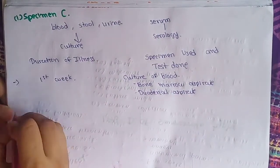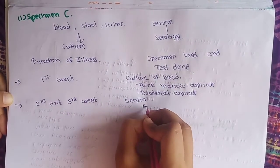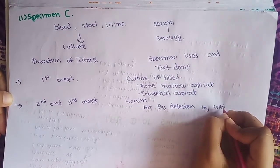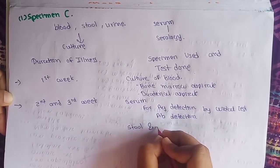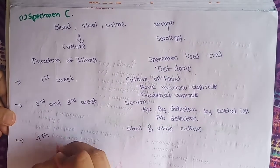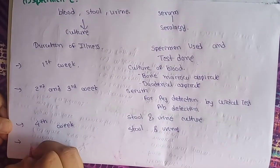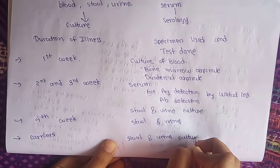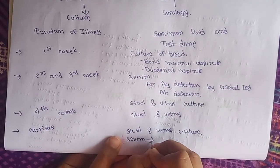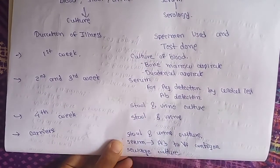In the second and third week of illness, we take both serum and culture. For serum examination we do antigen detection by Widal test and antibody detection, plus stool and urine culture examination. In the fourth week of illness, stool and urine culture are taken. For carriers, stool and urine cultures are taken along with serological examination — serum for detection of antibody to Vi antigen — and also sewage culture indirectly.